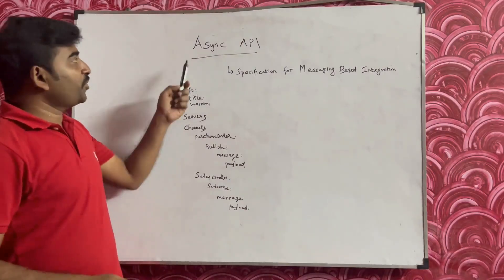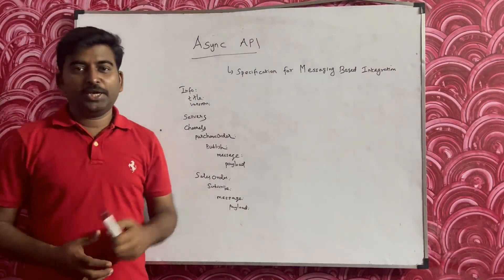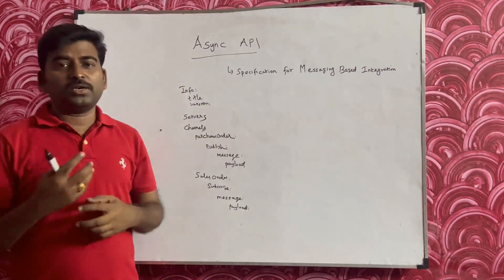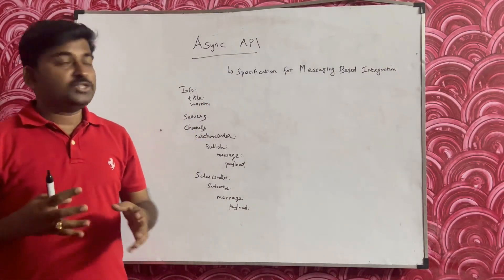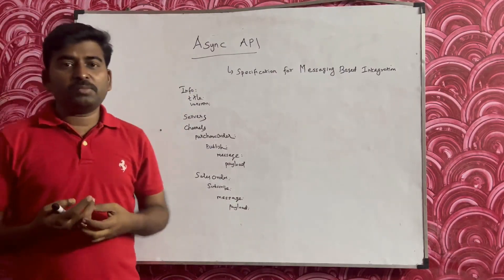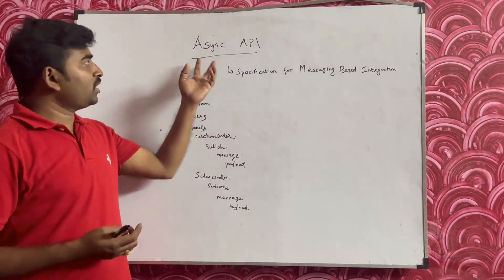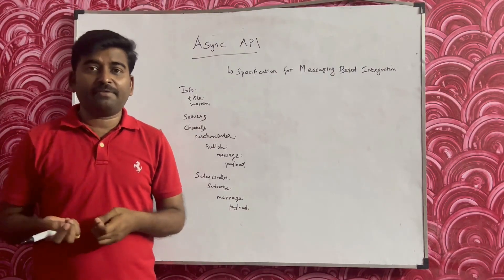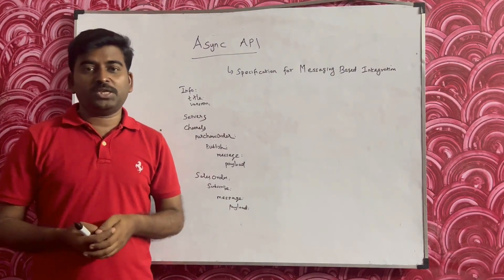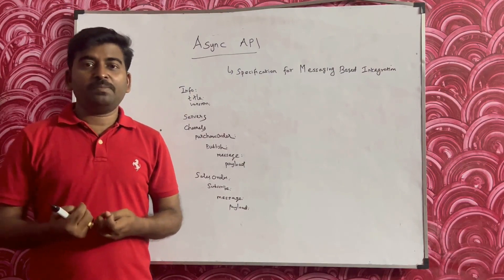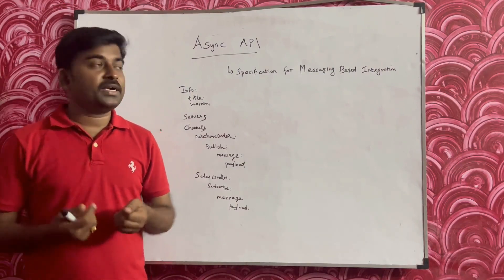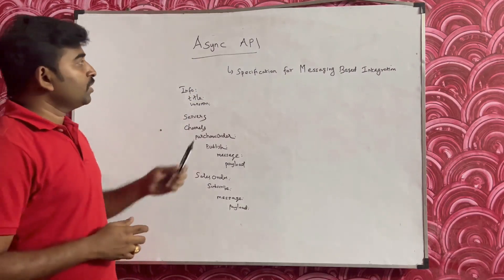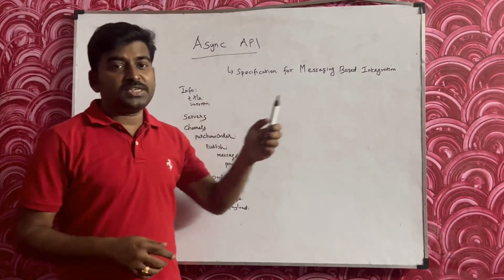In this video we are going to talk about AsyncAPI in MuleSoft. It's not only available in MuleSoft — this is one of the specification types in general. We might have heard about normal API specification. The normal API specification is more of a synchronous API, because whenever we call an API, we expect some kind of response immediately. But AsyncAPI is mainly used for messaging-based integration.